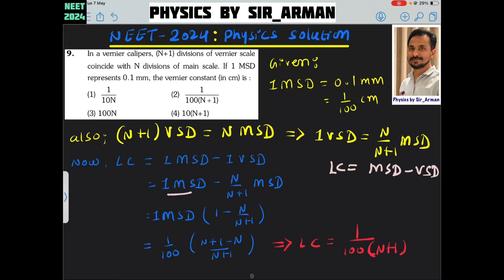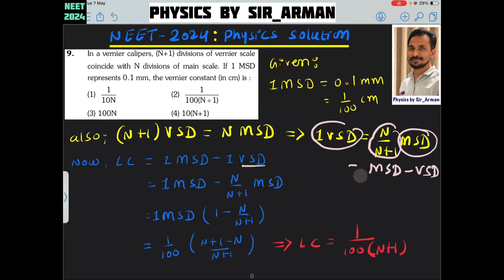So, it is 1 MSD minus the value of vernier scale division in terms of MSD, which is main scale division. So, 1 VSD equals n by n plus 1 MSD, and here it is n by n plus 1 MSD.